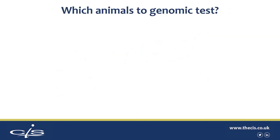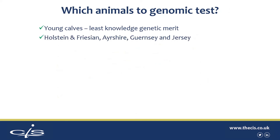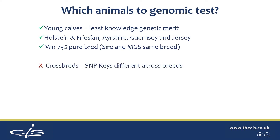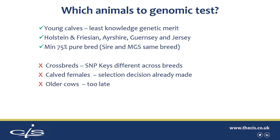Just to recap which animals to genomic test: young calves — those we know least about their genetic merit. In terms of breeds that can be done, dairy breeds — Holstein and Friesian, Ayrshire, Guernsey and Jersey — all have UK genomic evaluations, so they can all be genomic tested in the UK. It is recommended that animals be a minimum 75% purebred, meaning the sire and the maternal grandsire should be the same breed. That doesn't apply to Holsteins and Friesians — any makeup of Holsteins and Friesians is fine, as they are evaluated together. There's no point in genomic testing crossbreds, as the SNP keys can be different across breeds, so it's not reliable to test crossbreds. Once the female has calved and you've made the selection decision, there's less benefit from genomic testing, and it's too late for older cows.